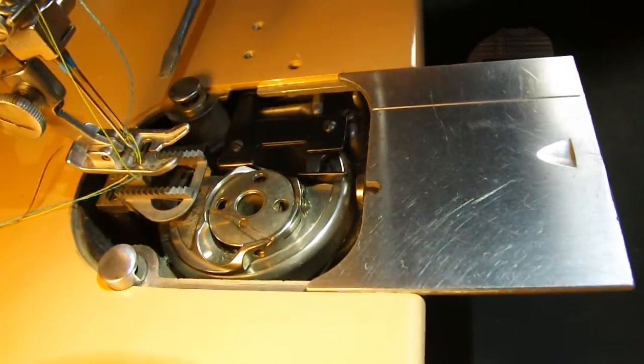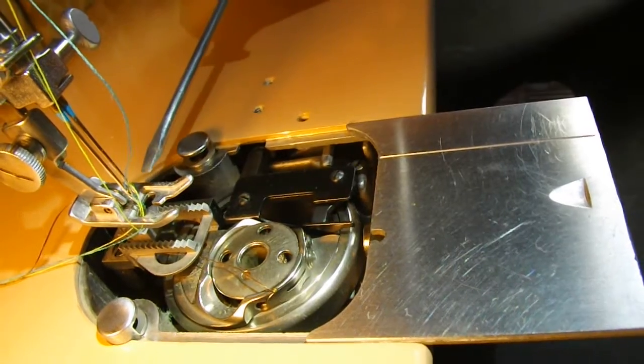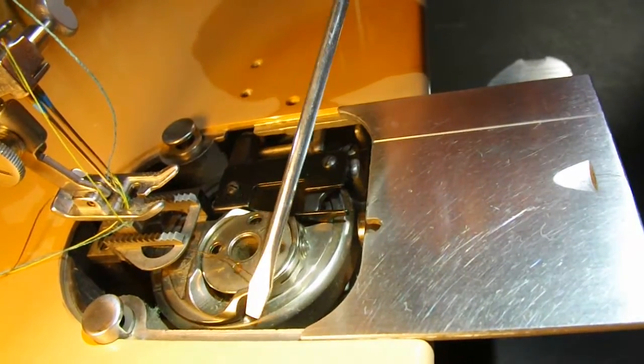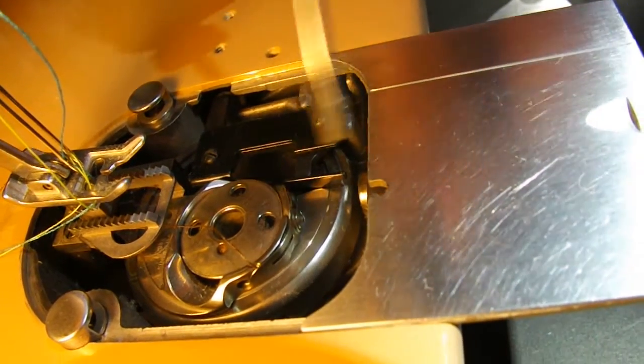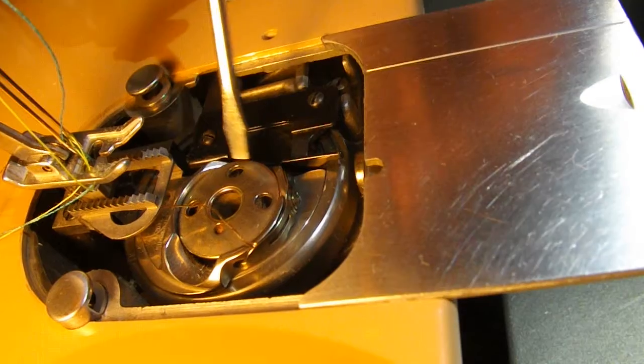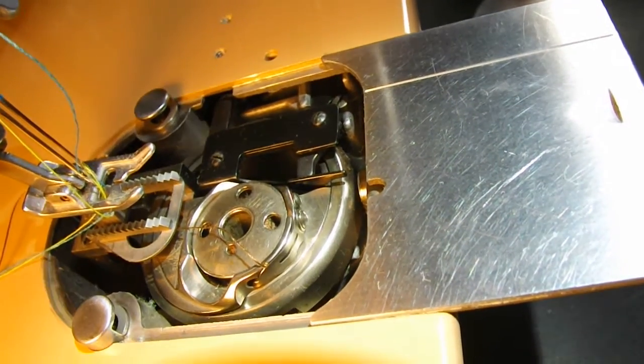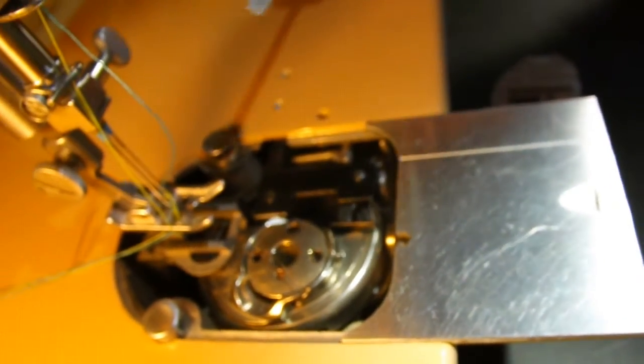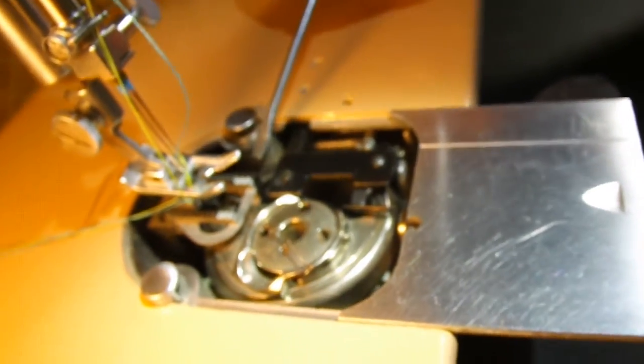The hook, if it's timed properly, is going to pick up both of the threads and bring them around the hook and around over this bobbin, pass through here, and wrap around the bobbin thread to make your lock stitch. So to pick up two threads, your timing really has to be set properly.